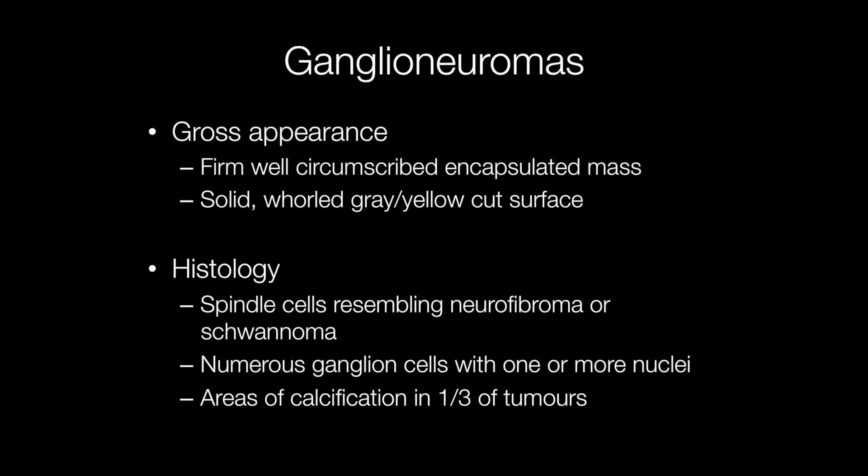The gross appearance of a ganglioneuroma is a firm, well-encapsulated, circumscribed mass with a solid, whorled, grey or yellow cut surface.